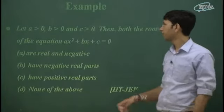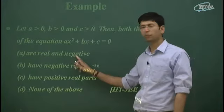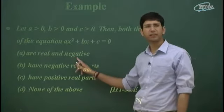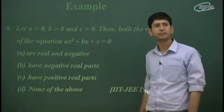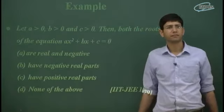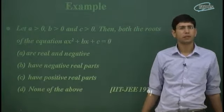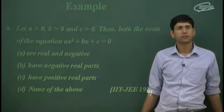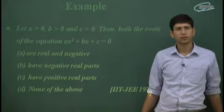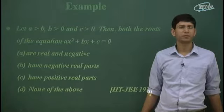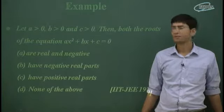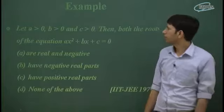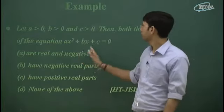Why have you written a negative real part? You are saying that A is the answer. It's wrong. Product of root — no, product of root is positive. Because A is positive, B is positive, C is positive.